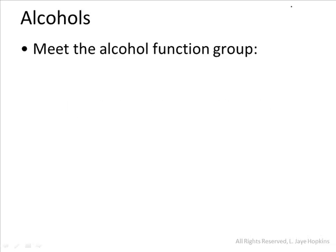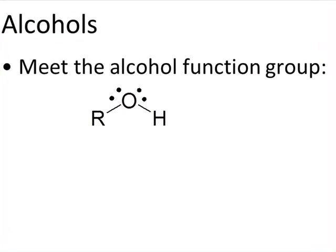The alcohol functional group is actually relatively simple, because it's comprised of just two atoms — an oxygen and a hydrogen. In the alcohol functional group, the oxygen is bonded on one side to a hydrogen and on the other to a carbon chain. I'm going to use the capital R to indicate that that carbon chain can vary. It could be a methyl, an ethyl, or something more complex.